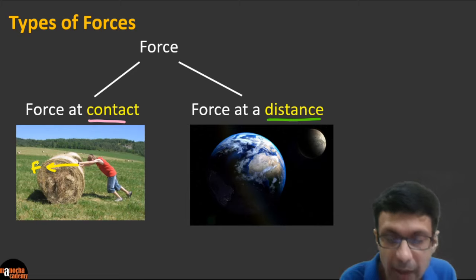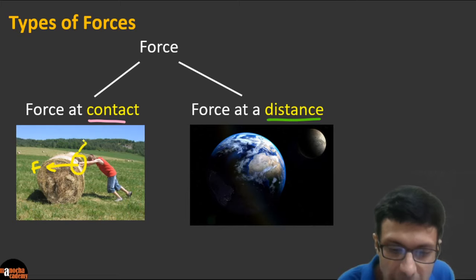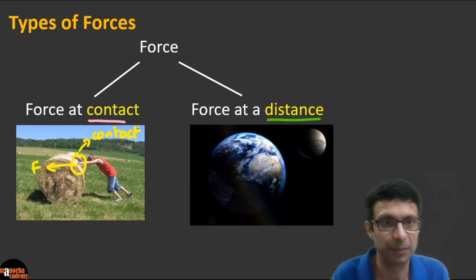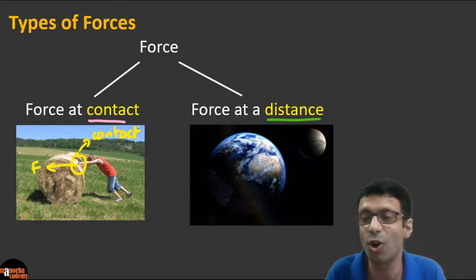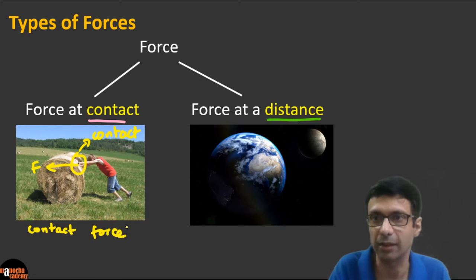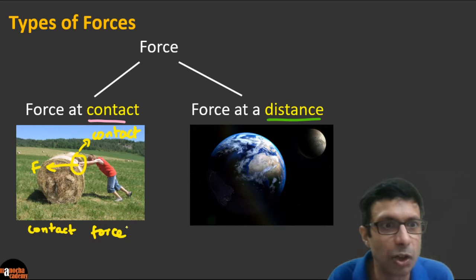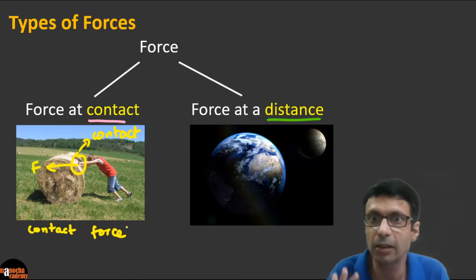When the person pushes the stack of hay, he's applying a force with his hand and there's a contact — a point of contact between the hand and the hay. This is called the contact force, or force at contact. There's actual contact between the hand and the object.